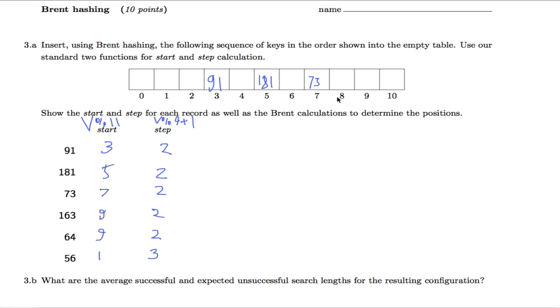Then 163 goes to 9. Now we have our first collision. 64 also wants to go to 9. So 64, we start here, there's a collision, and then we can go here, there is still a collision, we can go here, there is still a collision, and finally we can go here.